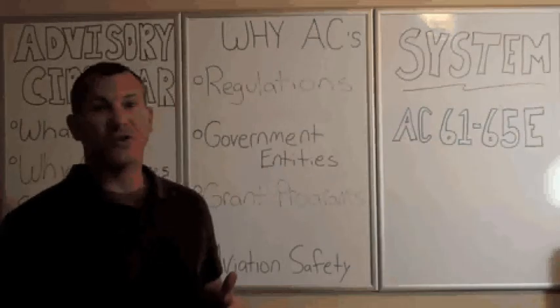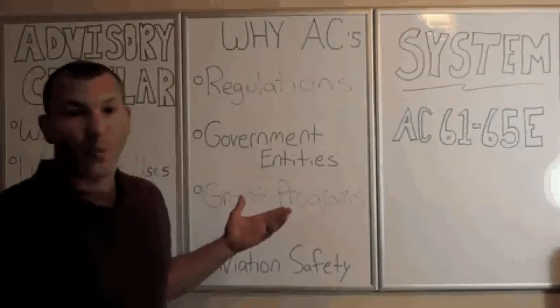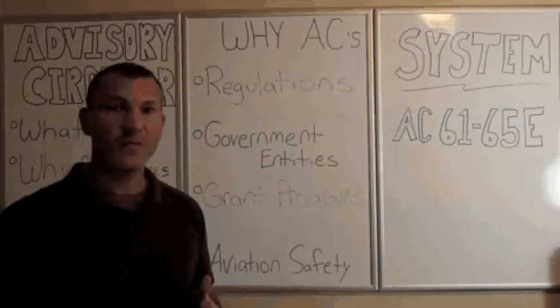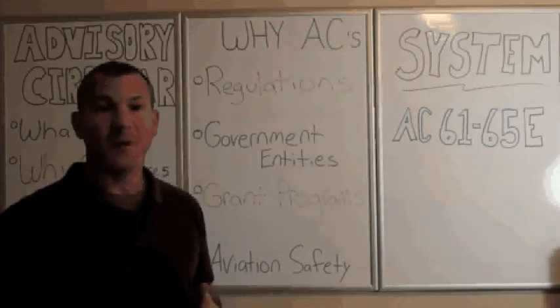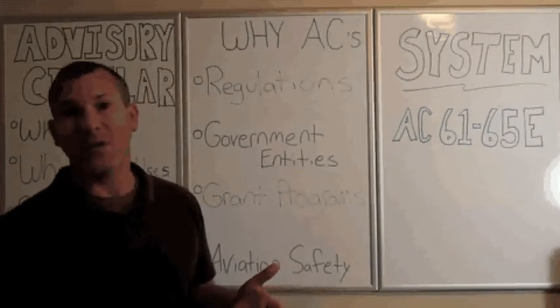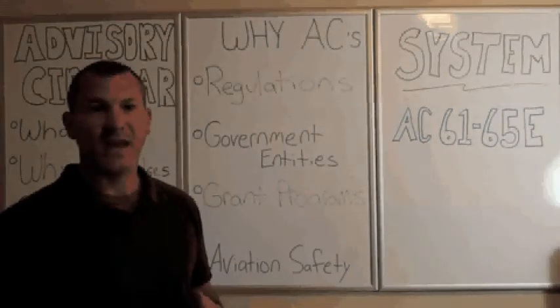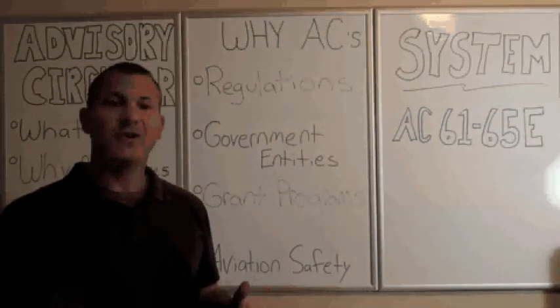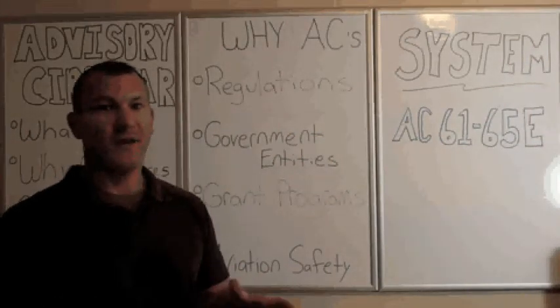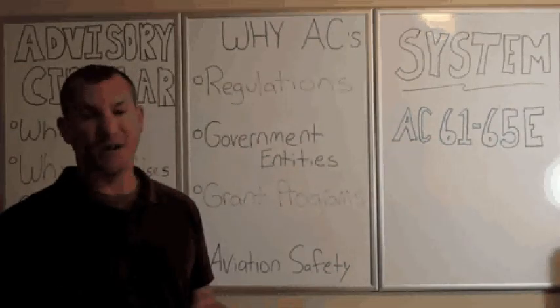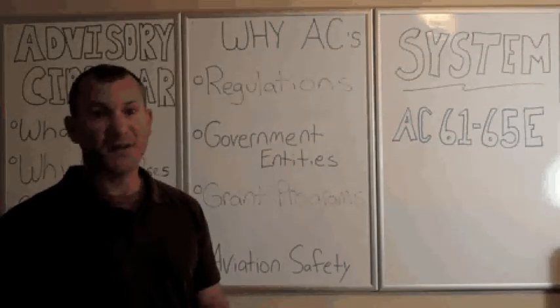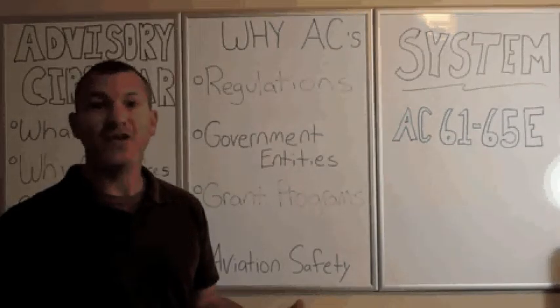The Advisory Circular System, what is it? Well, it's a systematic means of providing pilots with non-regulatory information of interest to the pilots. It provides guidance and information about methods to comply with FARs that are appropriate for the FAA. This Advisory Circular System provides a single, uniform, agency-wide system that the FAA uses to deliver information to customers, to industry, to pilots, and to the general public, the aviation community as a whole.